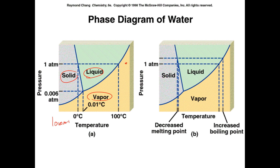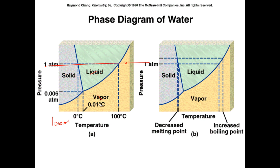On an exam, you may be given a phase diagram without the phases labeled, and you'll be expected to know where each phase is. The solid is at the lowest temperatures. As temperature goes up you have the liquid, and as temperature keeps rising you have the vapor or gas phase. Find a line passing through all of them and that will help you label them.